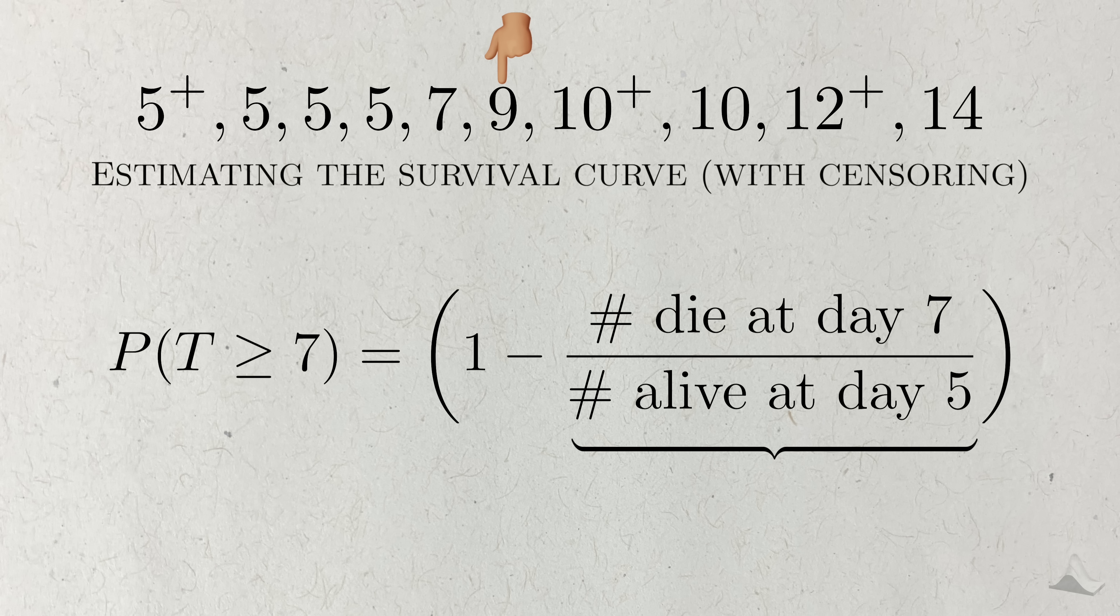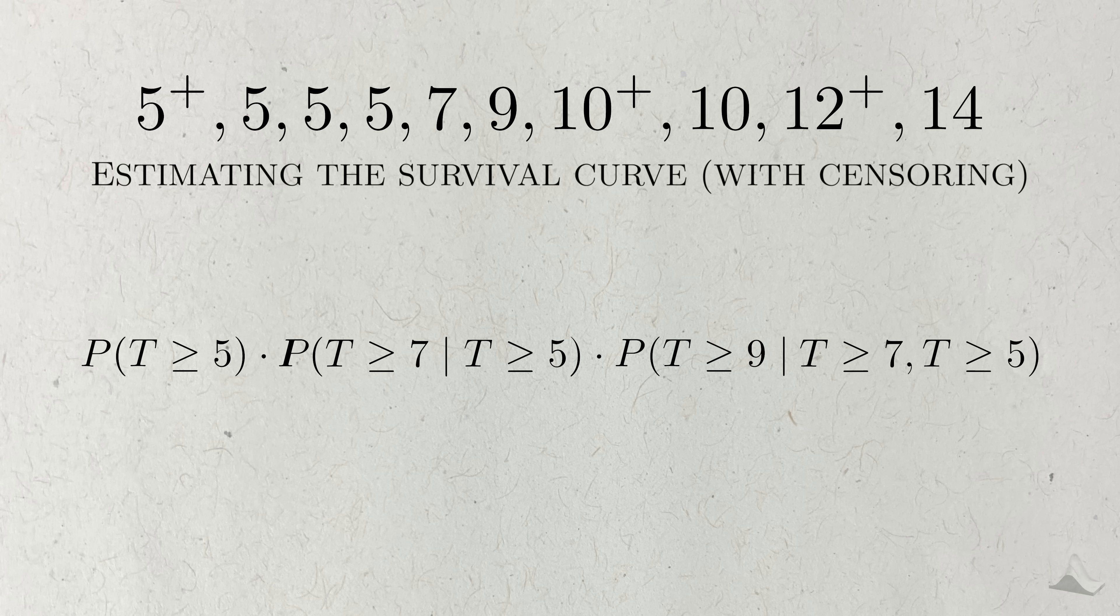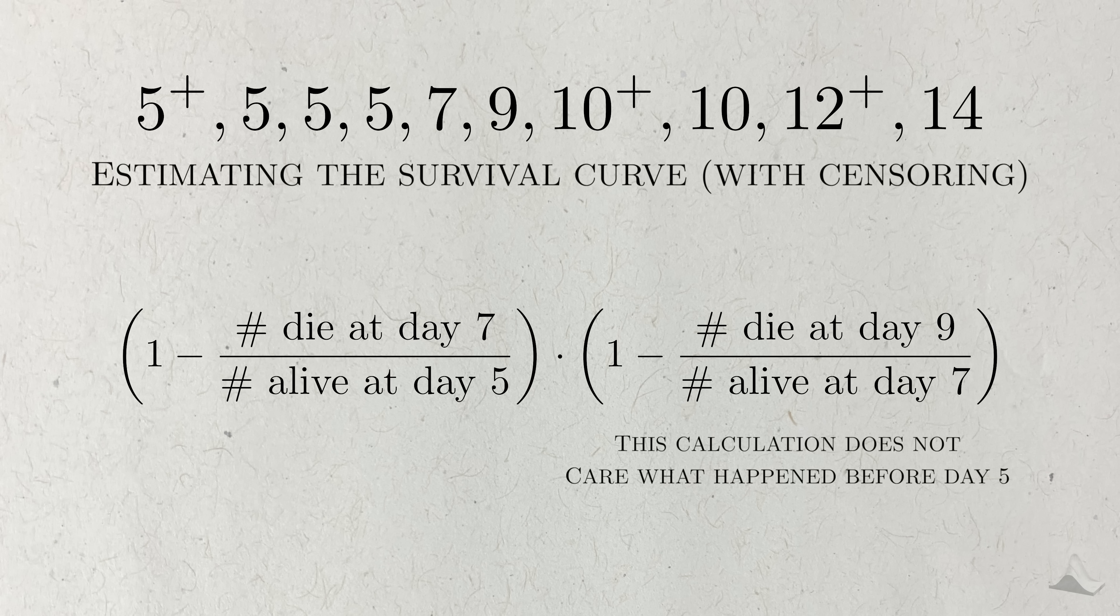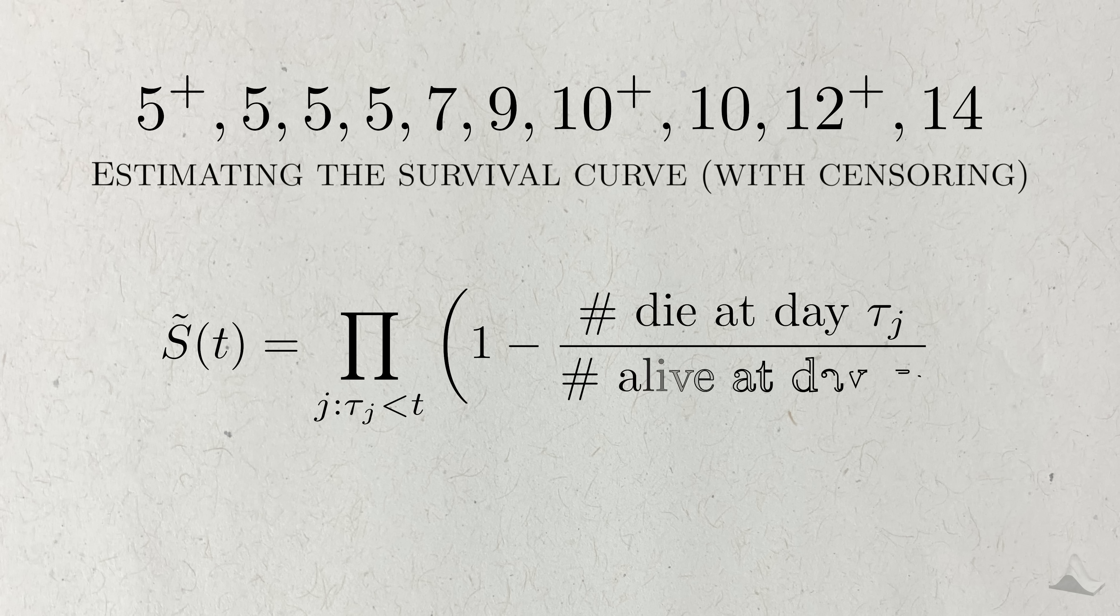The next time point in the data is day 9, where someone experienced the event. This person survived not just to day 9, but both day 7 and day 5. Like before, the probability that someone survives to all three of these days can be decomposed into a product of conditional probabilities. It's almost the same thing as the calculation for day 7, and now there's a third term where we condition on all the people who survive up to day 7. All the people who died or got censored at day 5 are not included in the risk set, so it only includes the six people left. If we repeat this process for all the unique time values in the data, then we'll get a general formula for estimating the survival curve with censored data.